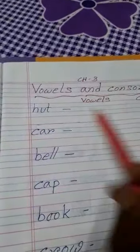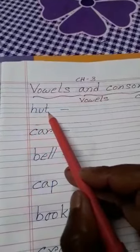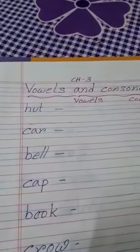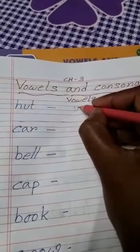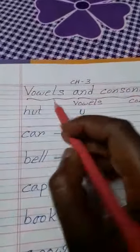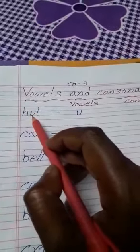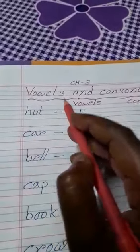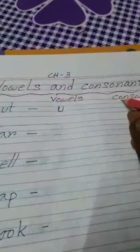Now tell me, among these 3 letters, which is vowel? So H and T are consonants.